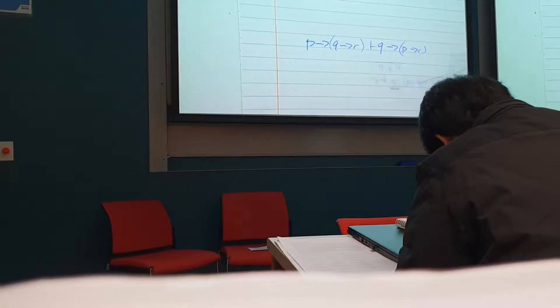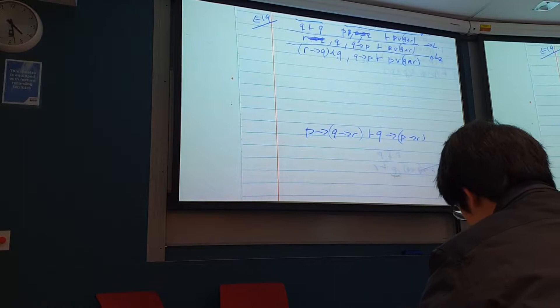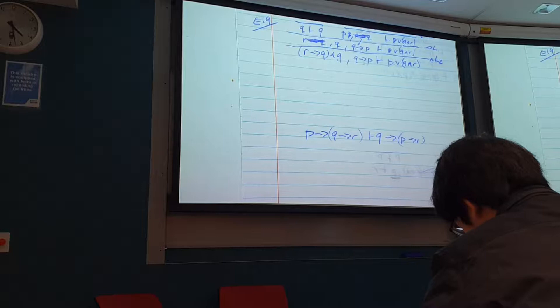We swap round in order, and that kind of makes sense, we expect this to be true. Now, we've only really looked at arrow on the left rule, we've got some arrows on the right as well. So let's take a quick look at the arrow on the right rule.